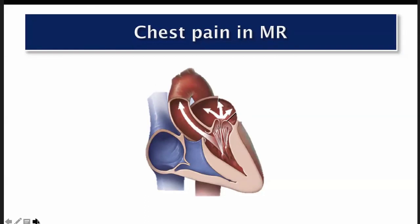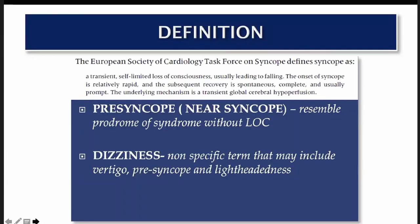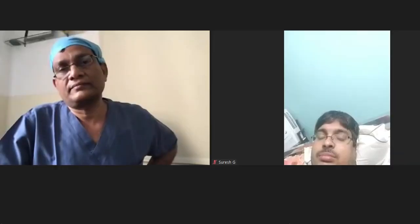Chest pain in mitral valve prolapse is due to increased chordal tension — stress on the chordae and papillary muscles as the valve prolapses into the left atrium. Other mechanisms may also contribute. The session concludes with the presenter noting a clinical emergency and thanking participants, indicating further discussion of clinical topics will continue in future sessions.